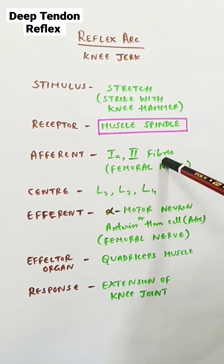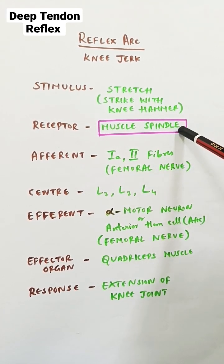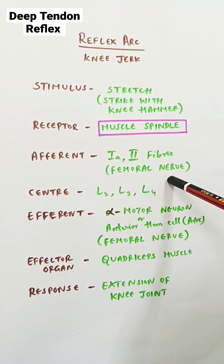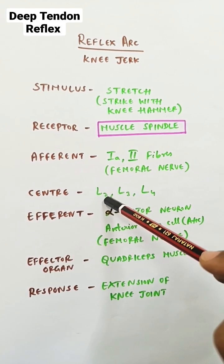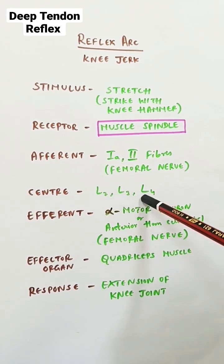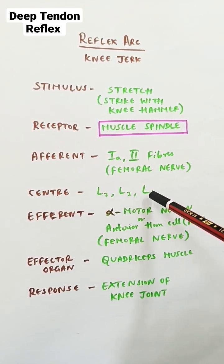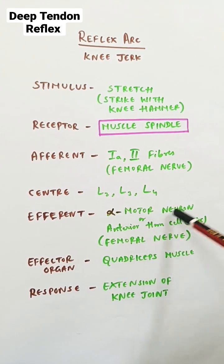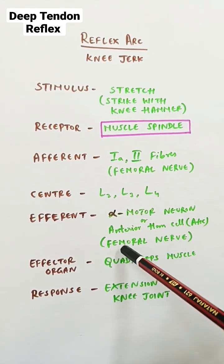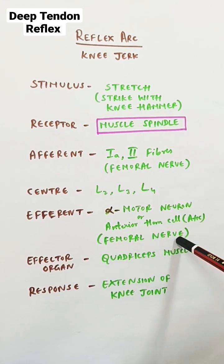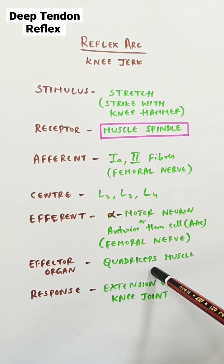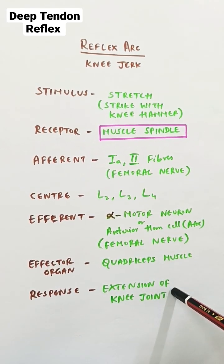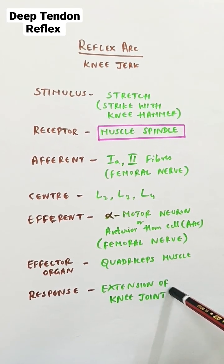The afferents are 1A and 2 fibers from the muscle spindle, which are passed via the femoral nerve to the lumbar segments L2, L3, and L4. From there, efferent signals come via the alpha motor neuron, pass via the femoral nerve, and supply the quadriceps muscle, causing contraction of the quadriceps and extension of the knee joint.